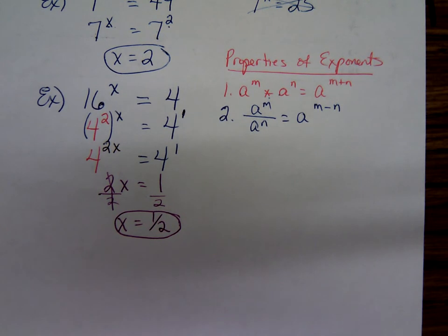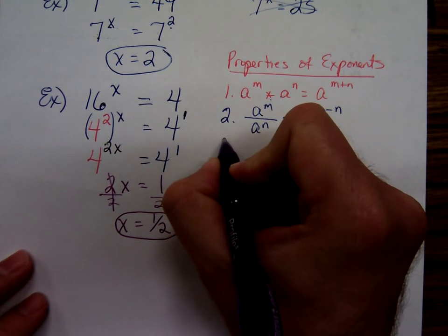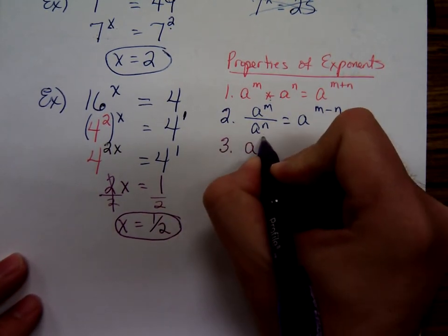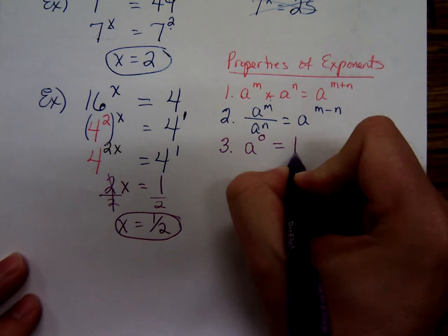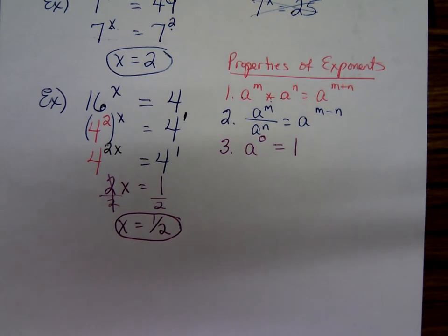Third rule is our definition of a zero exponent. A to the zero power equals 1. Generally, we say anything to the zero power is 1. With one exception, zero to the zero power is undefined. If you try to punch that into your calculator, you'll get undefined, not the number 1.